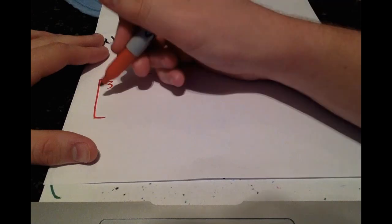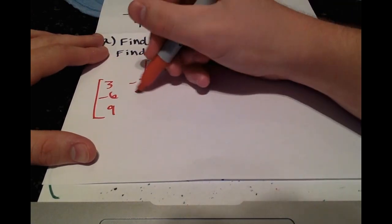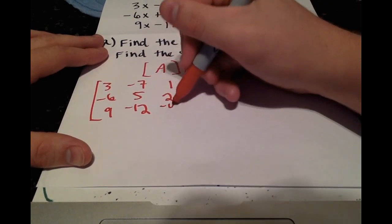Which is just 3, negative 6, 9, negative 7, 5, negative 12, 1, 2, negative 4.